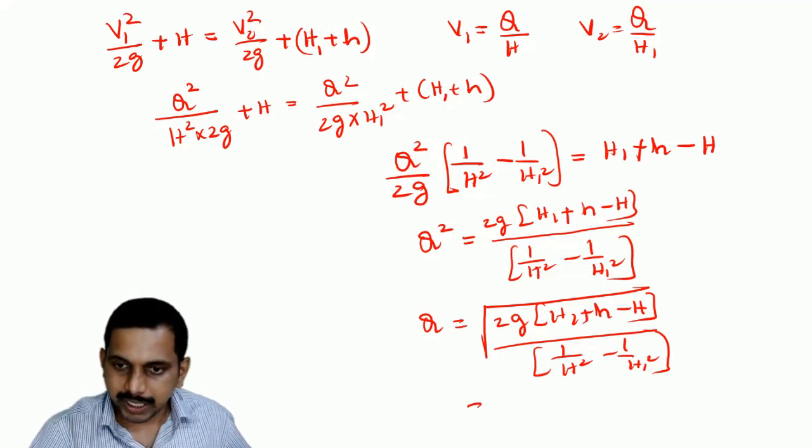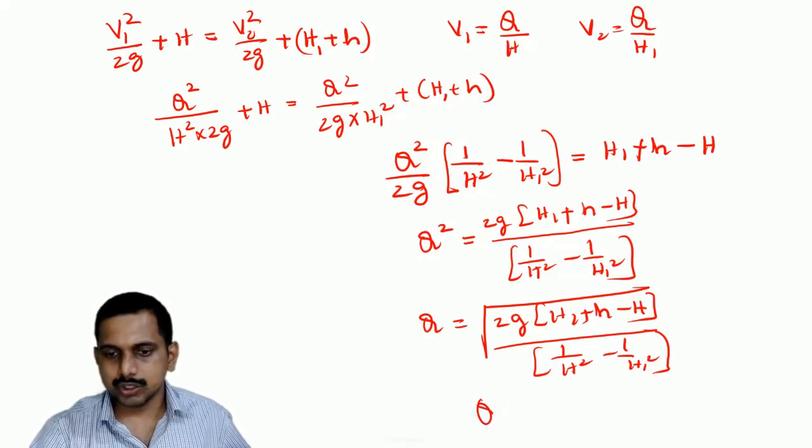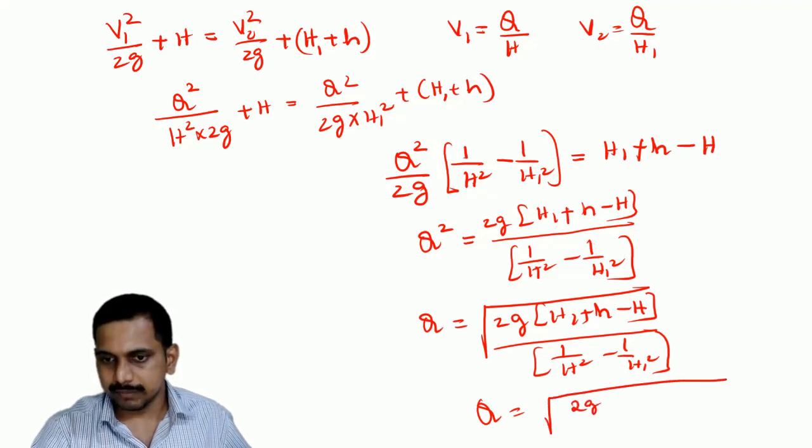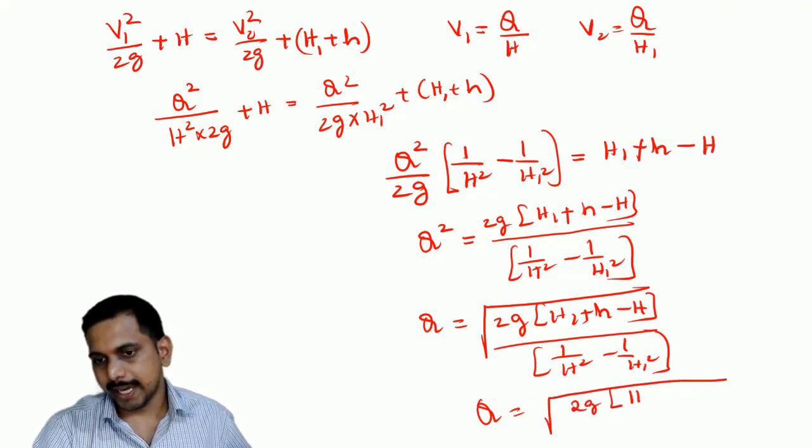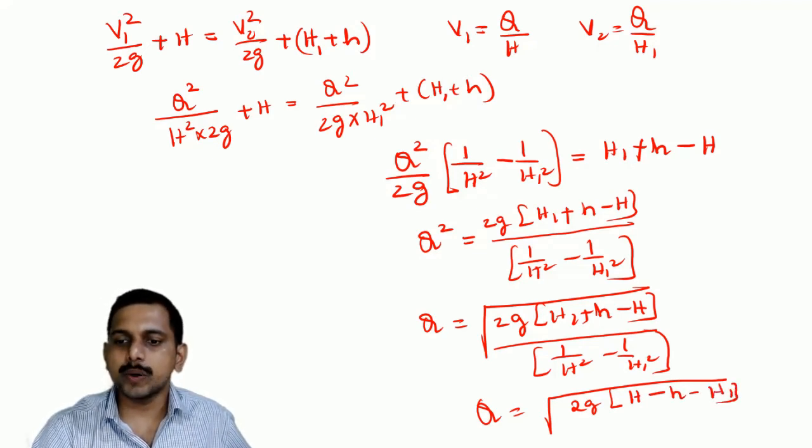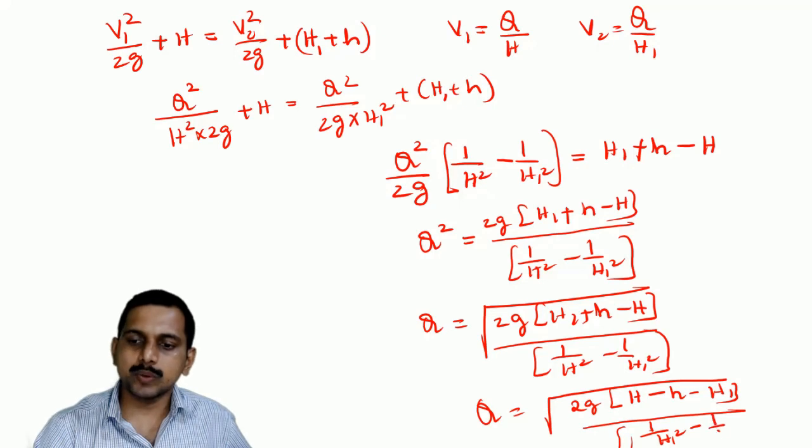So, if I take out minus from here, I can write this Q as also equal to square root of 2g into h, this capital minus I am taking out, minus small h minus capital H1 divided by, minus from here also, 1 by h1 square minus 1 by h square.